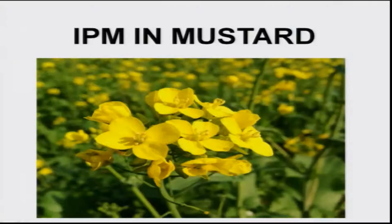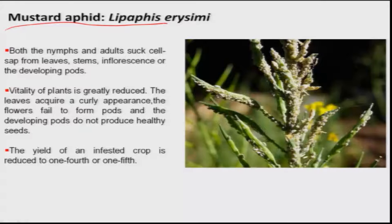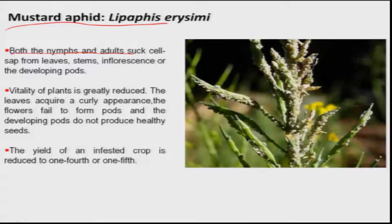We now move to mustard, an important oil seed crop. Mustard suffers from four to five major insects. The painted bug, Bagrada hilaris, is a sucking pest — both nymphs and adults suck sap affecting plant growth, and they also excrete a resinous material which spoils pods and seeds. The mustard aphid, Lipaphis erysimi, is an endemic pest wherever mustard is grown. Nymphs and adults desap all parts of the plant, causing shriveled seeds; yield loss can be as high as one-fourth to one-fifth.